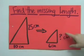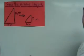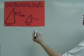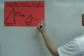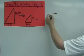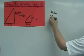Our job is to find this missing length. To solve this problem we're going to create a proportion, and this triangle is a ratio of 10 to 25.